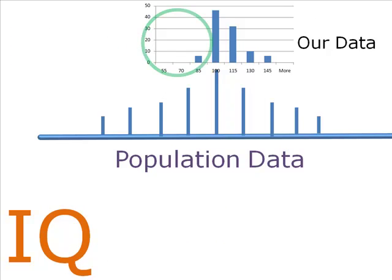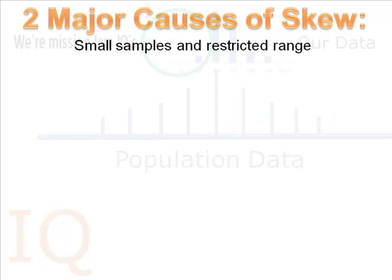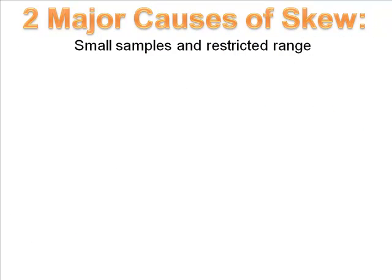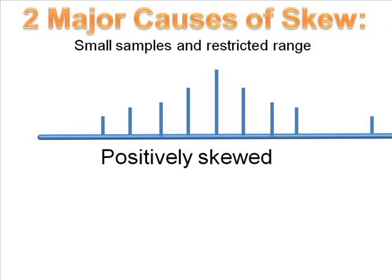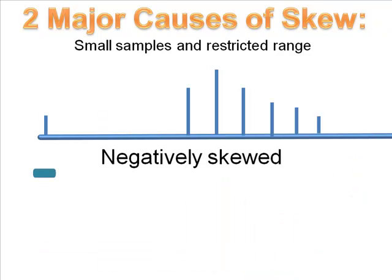But we're missing part of the curve. This tells us that our data is skewed. A skewed distribution often occurs when samples are too small, or you have restricted the range when you selected your sample. In a small sample, you might end up with a few really smart people and a bunch of normal folk. This would make a positively skewed distribution. One outlying low score in a distribution where everyone else is normal would be called a negatively skewed distribution.